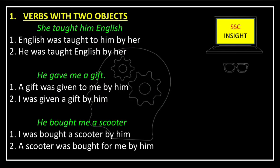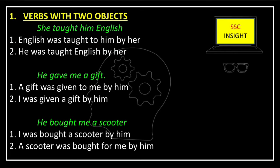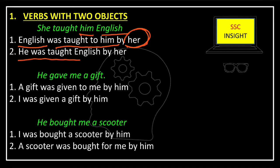The first topic is verbs with two objects. Sometimes verbs are used with two objects in active voice sentences, and passive voice can be made with either of these two objects. For example: 'She taught him English.' Here the subject is 'she,' the verb is 'taught,' and 'him' and 'English' are both objects. If we take 'English' as the object, the passive voice will be 'English was taught to him by her,' and if we take 'him' as the subject, it will be 'He was taught English by her.'